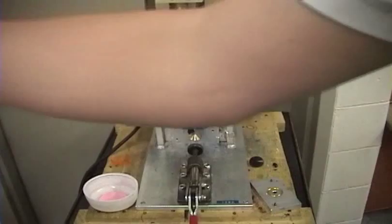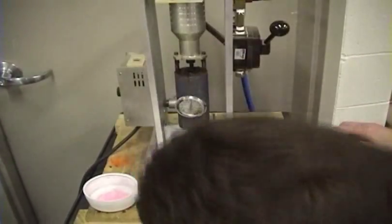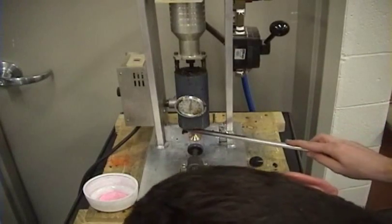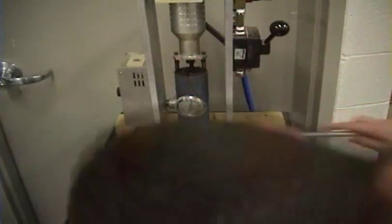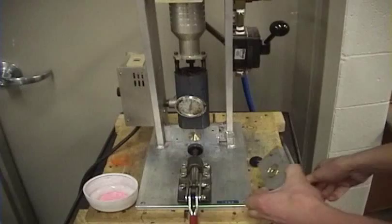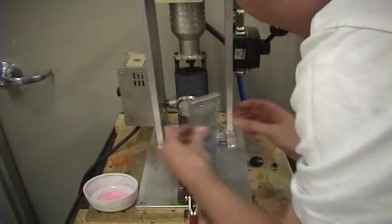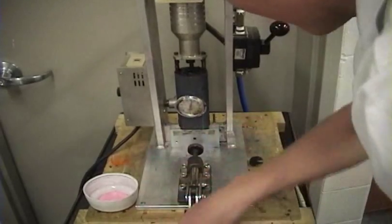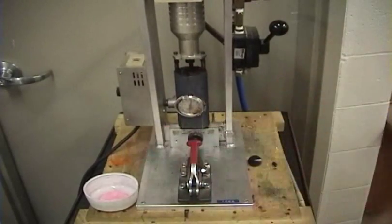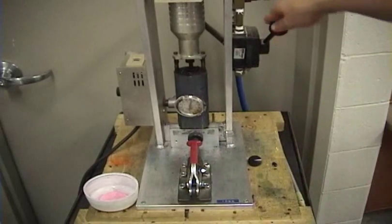So before you put everything back together again, make sure you've cleared out anything that could get in between the two plates. Put it back together again with the sprue up, the hole, and then make your next top.